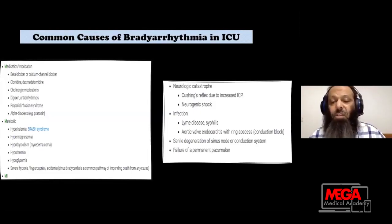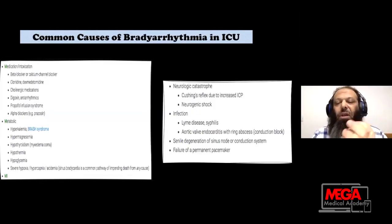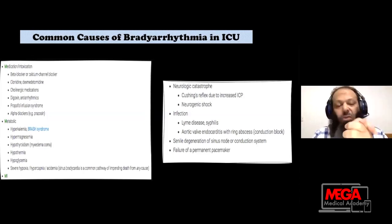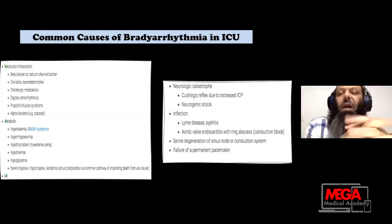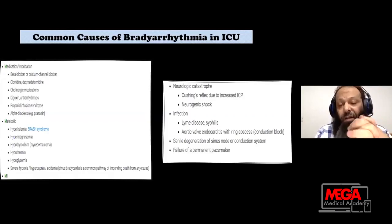For infections: aortic valve endocarditis and aortic valve abscess cause conduction abnormality and heart block. Syphilis and Lyme disease are also common infectious causes. We may not see a lot of syphilis now, but in the past it was associated with severe bradycardia.